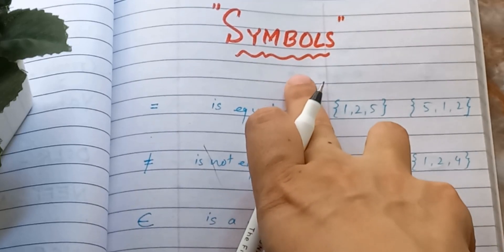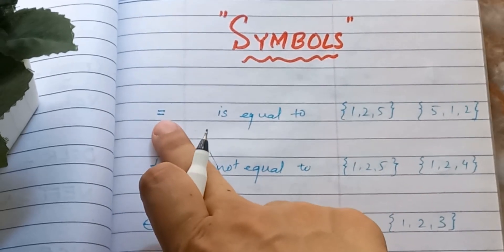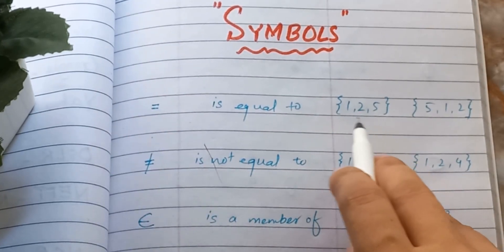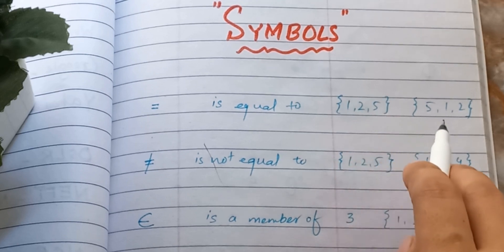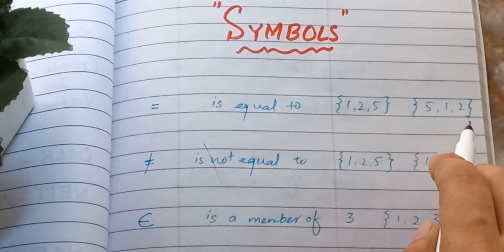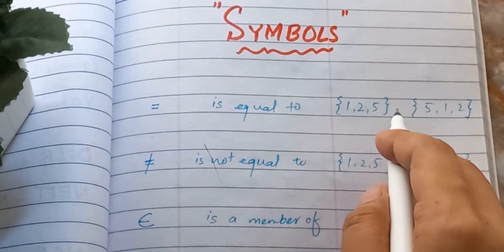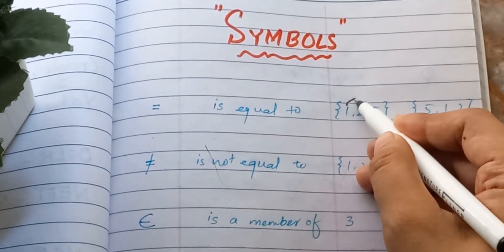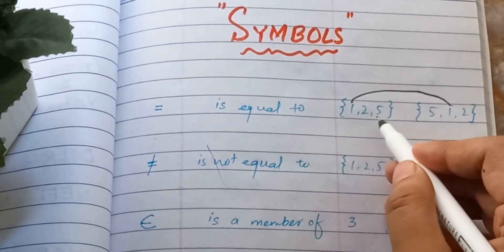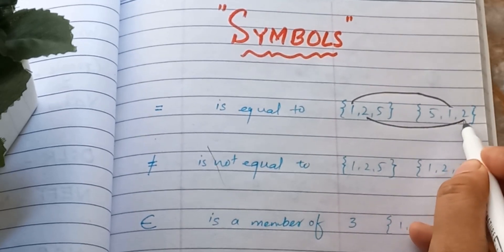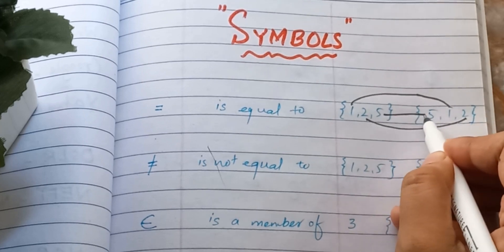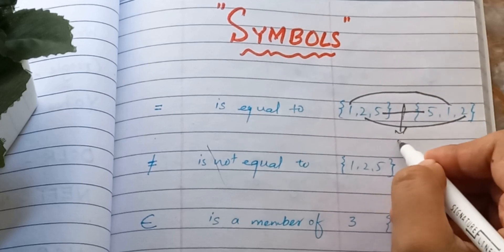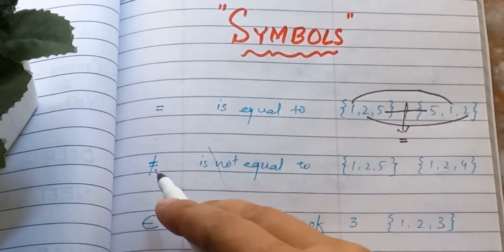Understanding the symbols: the first symbol is 'equal to,' denoted by the = sign. Here, set one is {1, 2, 5} and set two is {1, 2, 5}. The meaning of equal to is that both sets have the same numbers, so we put the equal to sign.